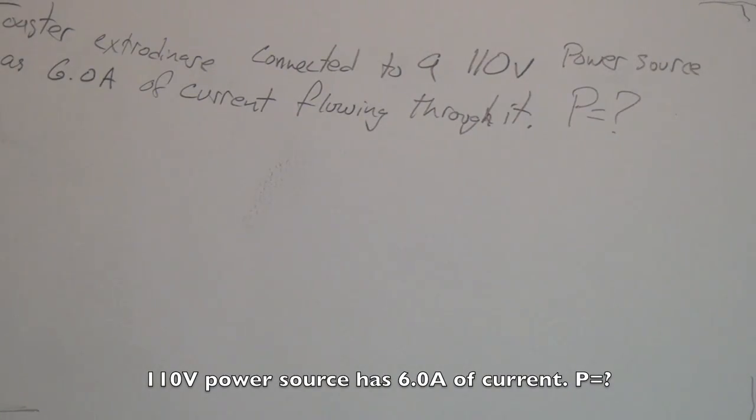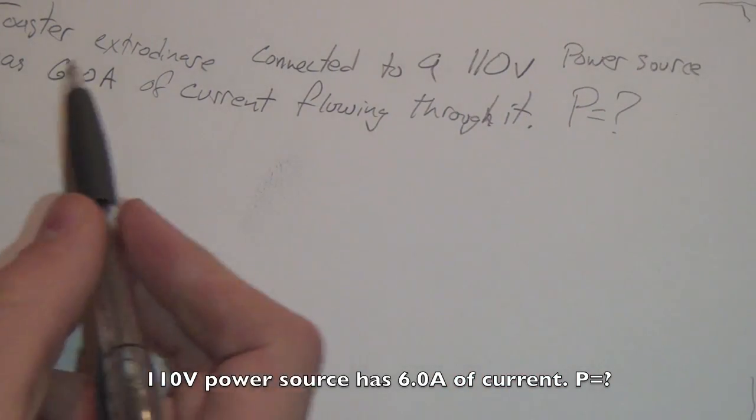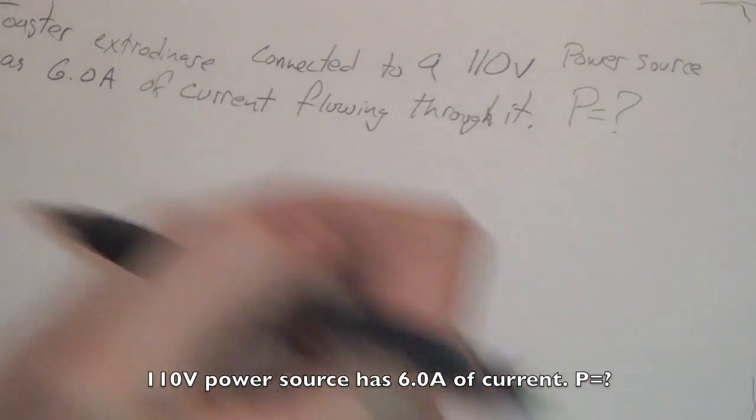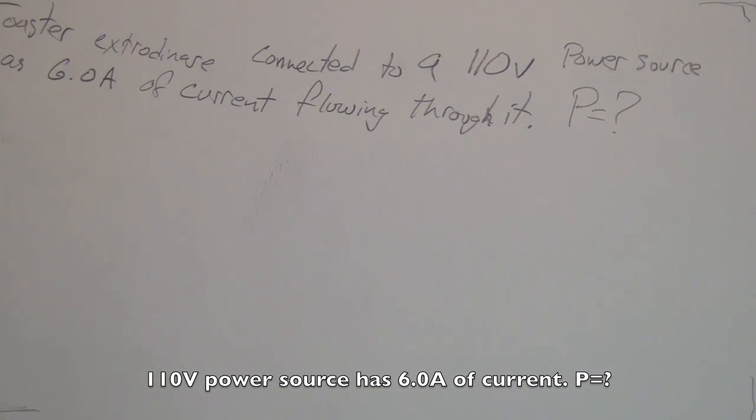Okay, so I apologize for my writing, but you know what? Who cares? I understand power. And I'm pretty sure you will stop caring about my writing as soon as we get through this and you're so happy that you understand this. Here is a different question involving a different equation with power. So a toaster extraordinaire connected to a 110 volt power source has 6.8 amps of current flowing through it. What is the power? How much power is dissipated through heat? Because that's what a toaster does through heat.